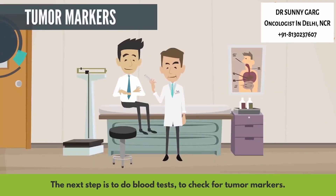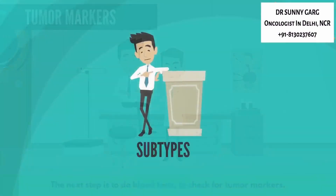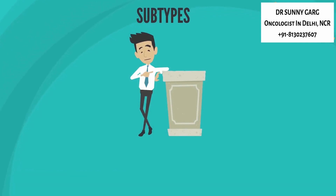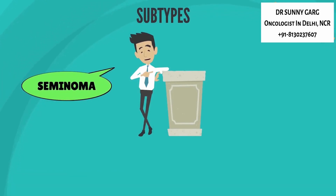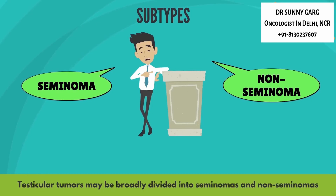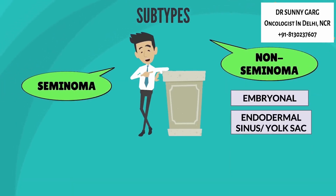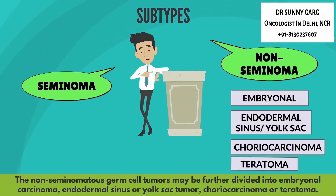The next step is to do blood tests to check for tumor markers. Before discussing the tumor markers in detail, we will first discuss the subtypes of testicular cancer. Testicular tumors may be broadly divided into seminomas or non-seminomas. The non-seminomatous germ cell tumors may be further divided into embryonal carcinoma, endodermal sinus or yolk sac tumor, choriocarcinoma, or teratoma.